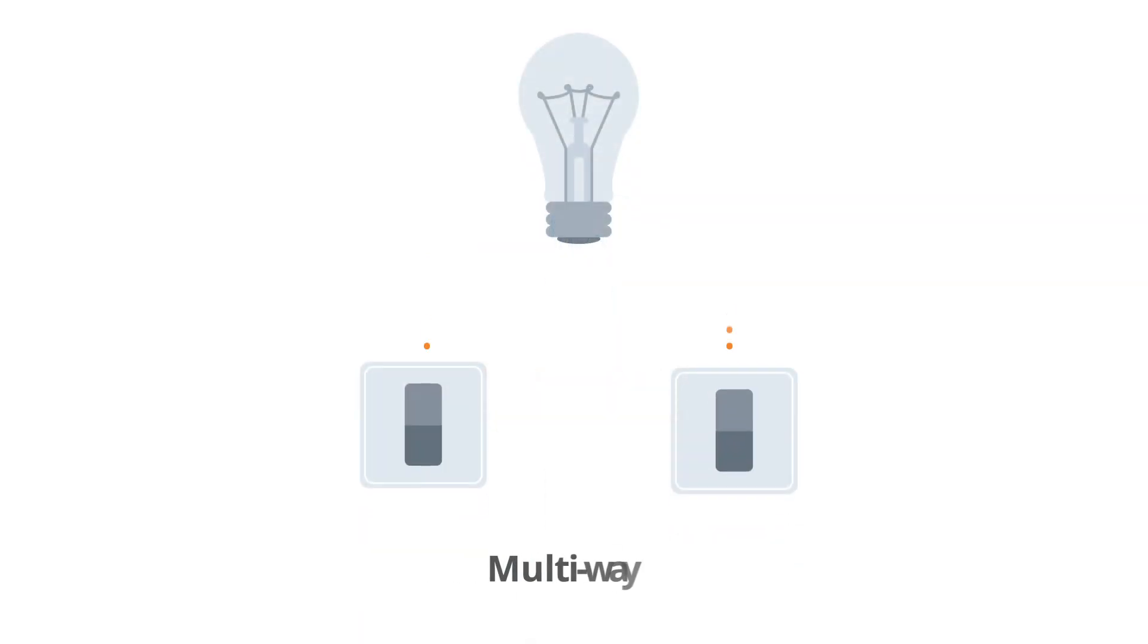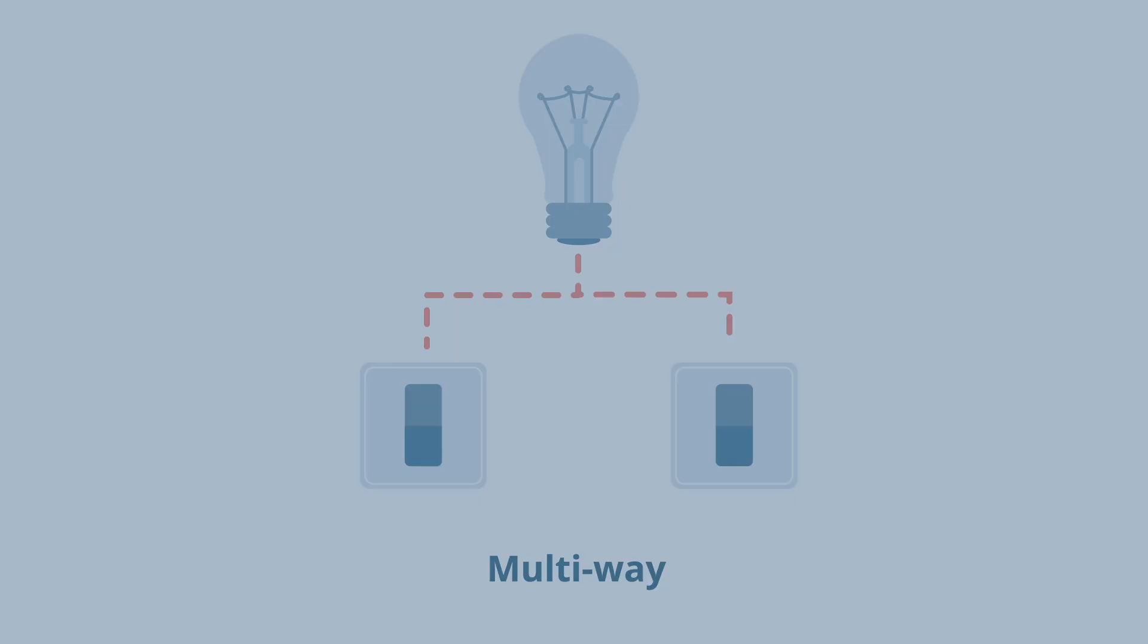A multi-way light switch is a light switch that can be turned on or off from multiple locations. It's important to keep in mind if you do have a multi-way switch, there are a few wiring scenarios in which Brilliant will not work.